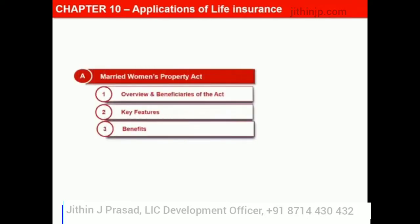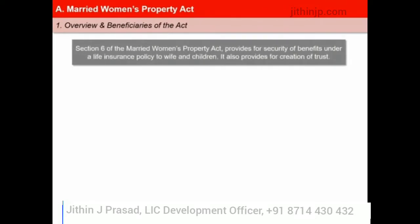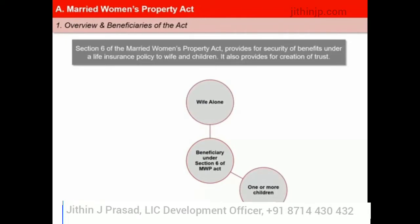Let us begin by understanding the Married Women's Property Act in detail. Section 6 of the Married Women's Property Act 1874 provides for security of benefits under a life insurance policy to wife and children, and also provides for creation of trust. It lays down that a policy of insurance effected by any married man on his own life, expressed on the face of it to be for the benefit of his wife or children, shall be deemed to be a trust for their benefit, and shall not, so long as any object of the trust remains, be subject to the control of the husband, his creditors, or form part of his estate.